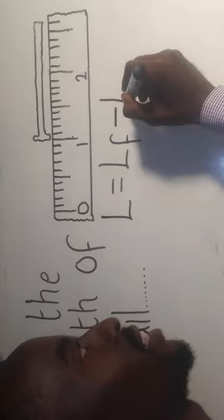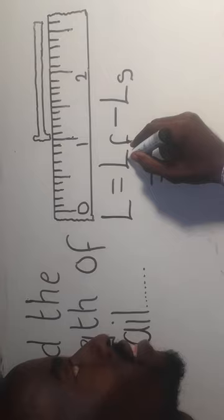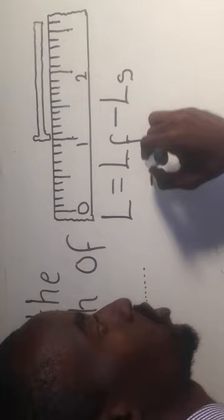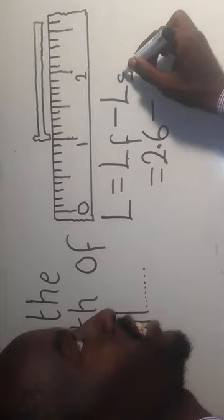The final length is where the nail is pointing here. So this is 2 or 2.0, this is 2.5, this is 2.6. So we say 2.6 minus the initial length.